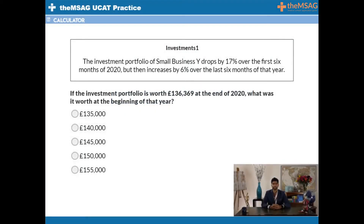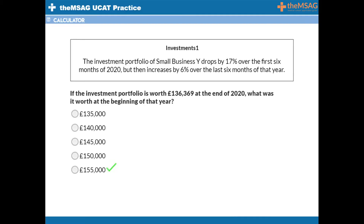Question 5. The investment portfolio of Small Business Y drops by 17% over the first six months of 2020, but then increases by 6% over the last six months of that year. If the investment portfolio is worth £136,369 at the end of 2020, what was it worth at the start of the year? The answer is E, £155,000.